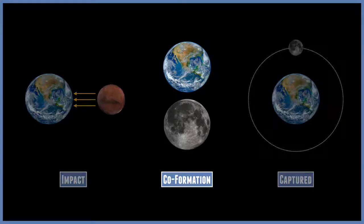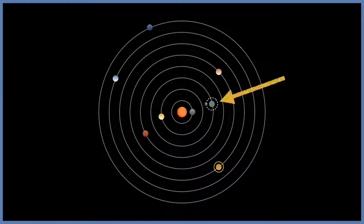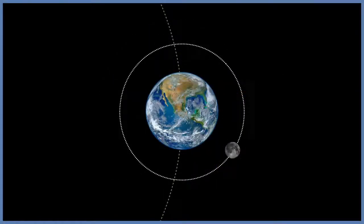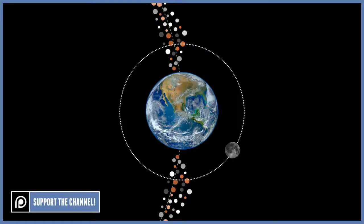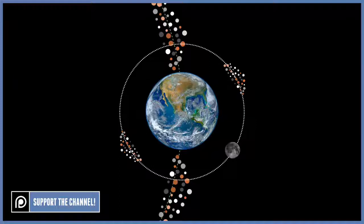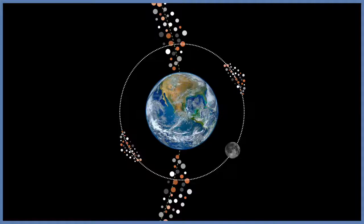The second one is the co-formation theory. So moons can often form at the same time as their parent planet. The material in the early solar system would have drew together through gravity. The formation of the moon would have formed at the same time as the formation of the earth, and because it would have formed in the same place, it would have been made of the same material. This gives a good reason to why the moon has a very similar composition to our planet, and it would explain the moon's location.